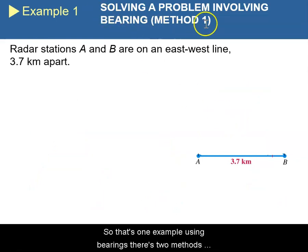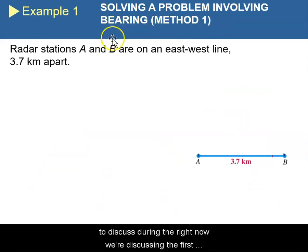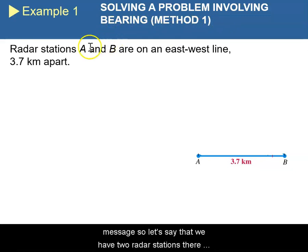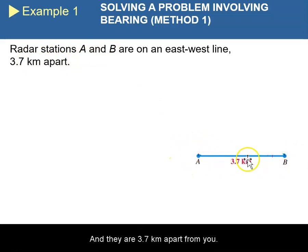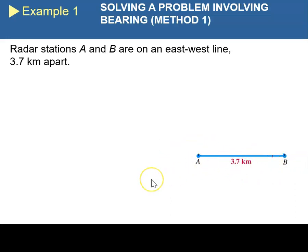So let's do an example using bearings. There are two methods to discuss bearings, and right now we're discussing the first method. Let's say that we have two radar stations on the east-west line, and they are 3.7 kilometers apart from each other.